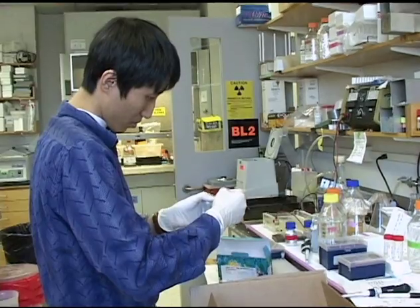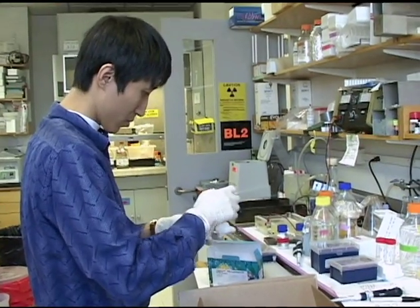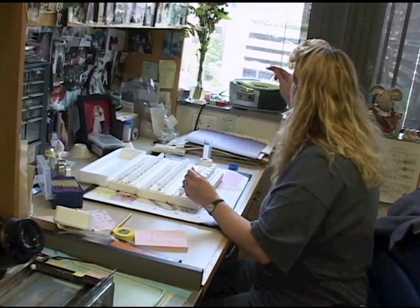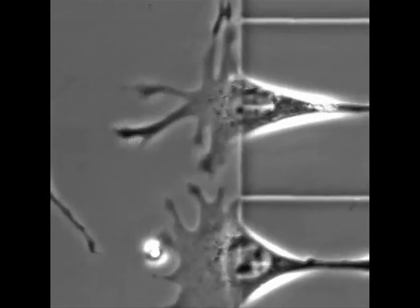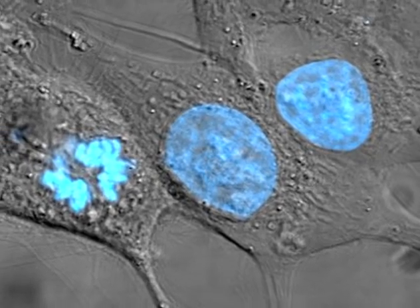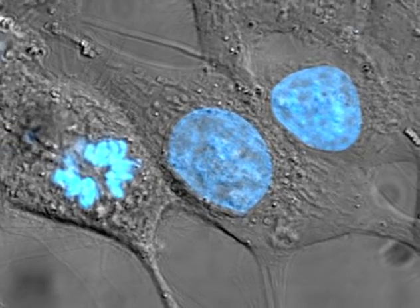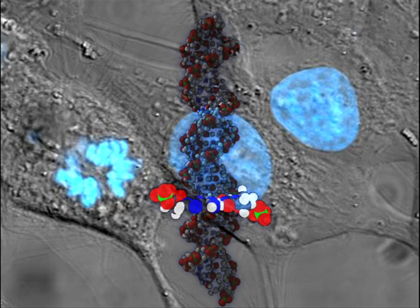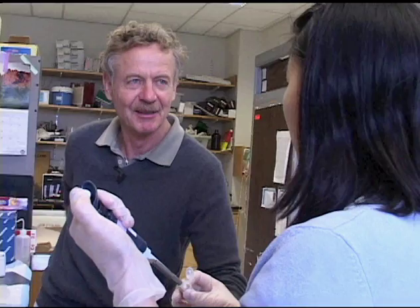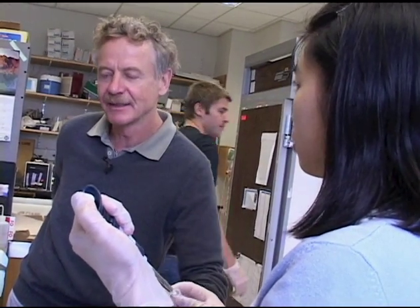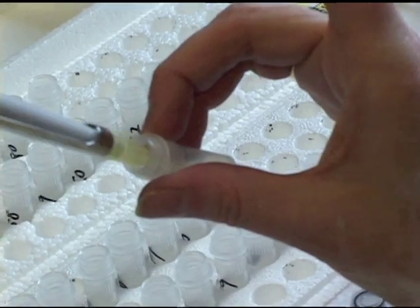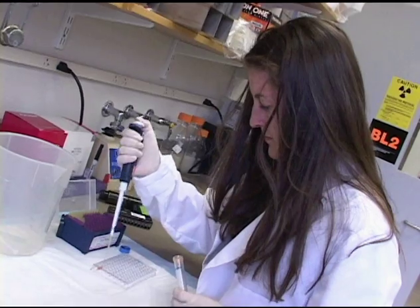Later that year, Jaenisch's lab built on this achievement with the first proof in principle that these cells had therapeutic potential. One of the goals of this type of research is to make customized cells for tissue repair. Today, Jaenisch is using patient-derived iPS cells to study such complex diseases as Parkinson's and Alzheimer's.